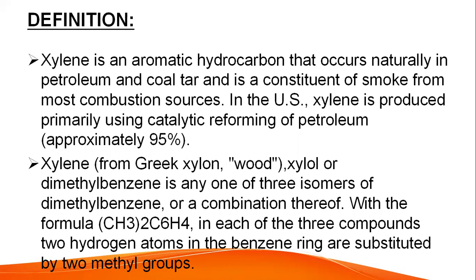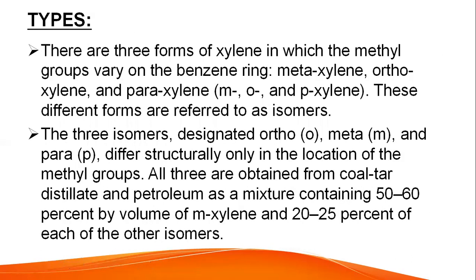In the US, xylene is produced primarily using catalytic reforming of petroleum, approximately 95 percent. Xylene — from Greek xylon meaning wood — or dimethylbenzene, is any one of three isomers of dimethylbenzene, or a combination thereof, with the formula (CH3)2C6H4. In each of the three compounds, two hydrogen atoms in the benzene ring are substituted by two methyl groups.